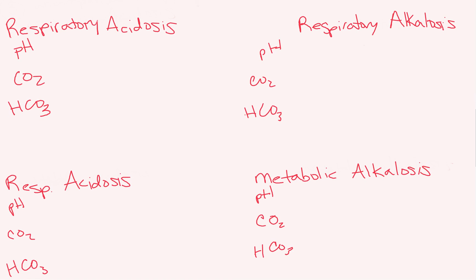With respiratory acidosis, CO2 is an acid, so we're going to see an acidic pH — a pH less than 7.35. Since it's a respiratory cause, CO2 is the cause; your lungs have altered the amount of CO2 and that's causing acidosis. Increased acidic CO2 will cause respiratory acidosis. Starting out uncompensated, our HCO3 bicarb is going to be normal because the cause is respiratory and your kidneys haven't realized anything weird is going on.